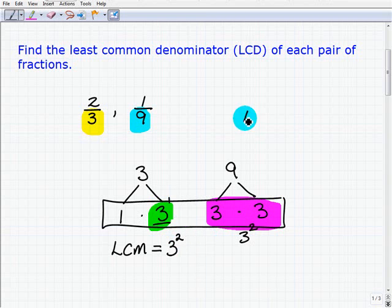Which means that the LCD is 9. Recall that the LCM or the LCD is the lowest number that both of these numbers go into. So if I ask you, what's the lowest number you can think of that both 3 divides into and 9 divides into, that number is 9. Let's move forward.